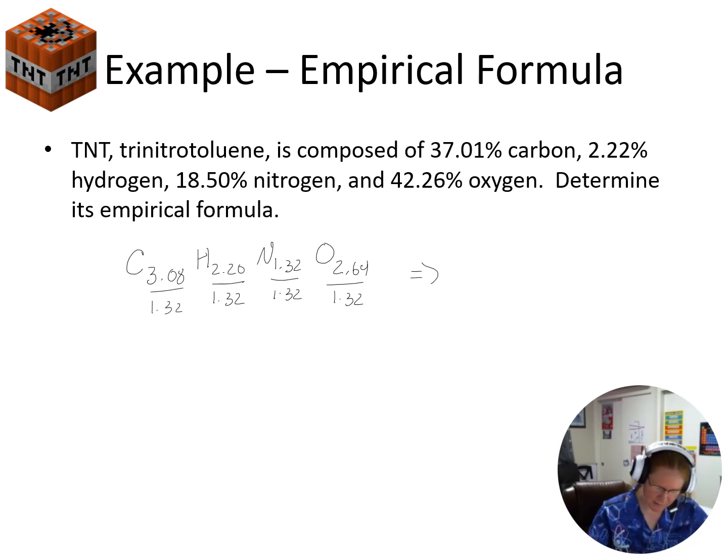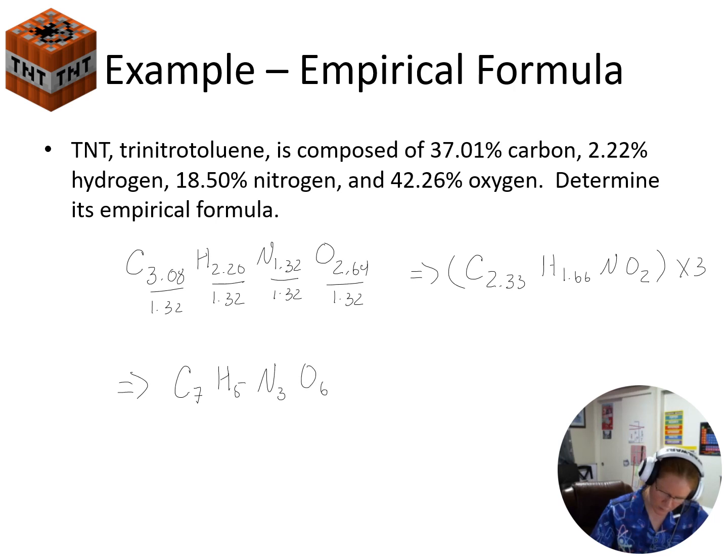And so what we end up getting is C 2.33, H 1.66, N 1, O 2. So this is actually nice in that we have a 0.33 and a 0.66, because if you have 0.33 or 0.66, then you can multiply the whole thing by 3. So we only have to do that. So I'm going to multiply the whole thing by 3. I'm going to end up with a final empirical formula. So we have C7H5N3O6.